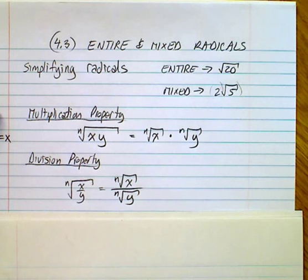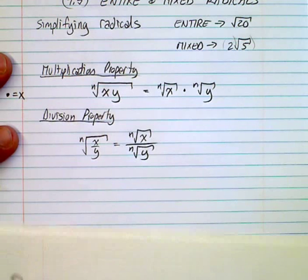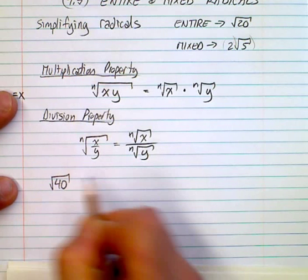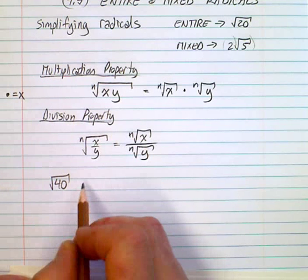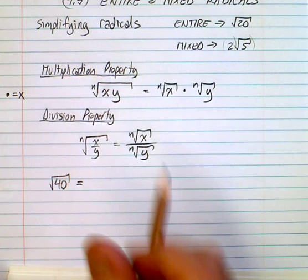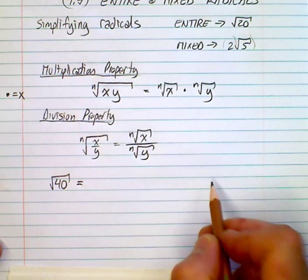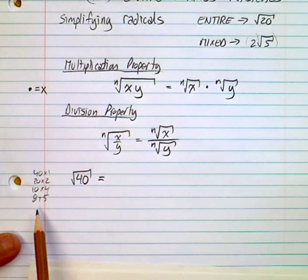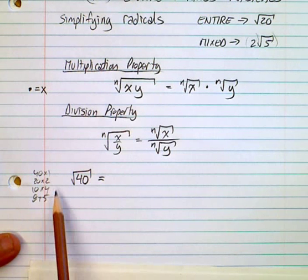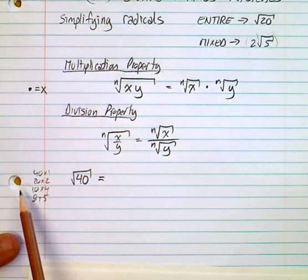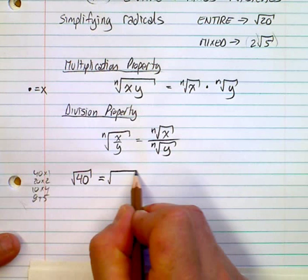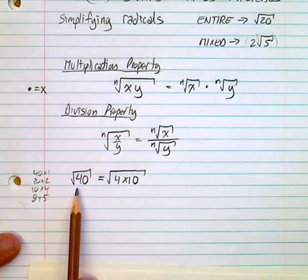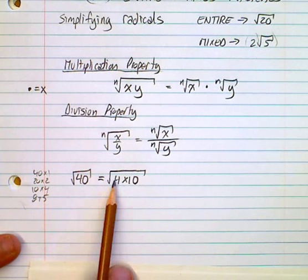Let's jump into examples. For the square root of 40, you need to break it into two factors where one is a perfect square. The factors of 40 are: 40×1, 20×2, 10×4, and 8×5. You can see that 4 is a perfect square, so we break 40 into 4 times 10.